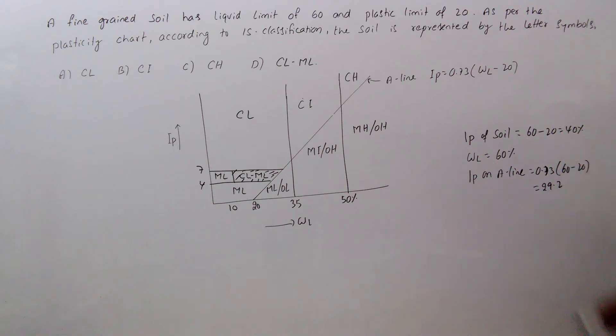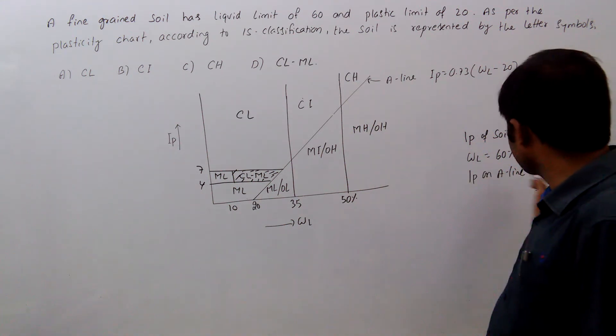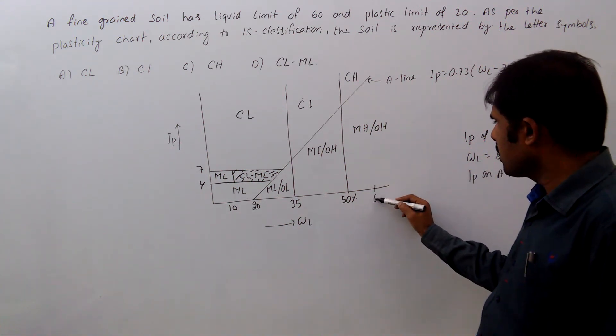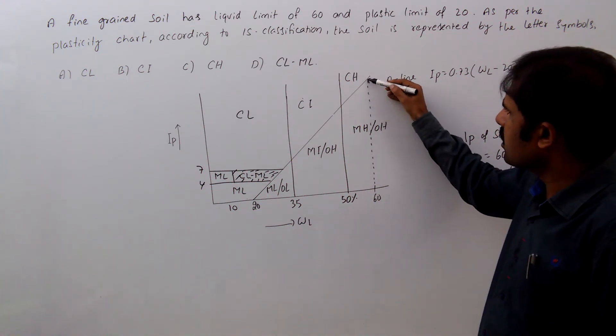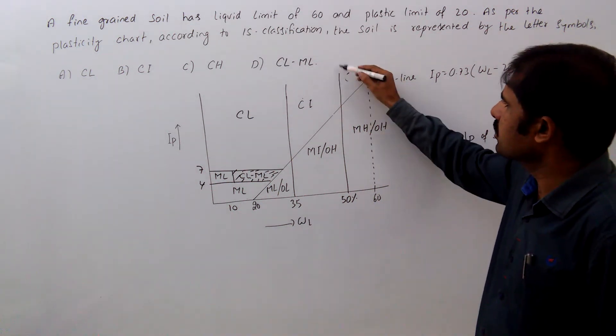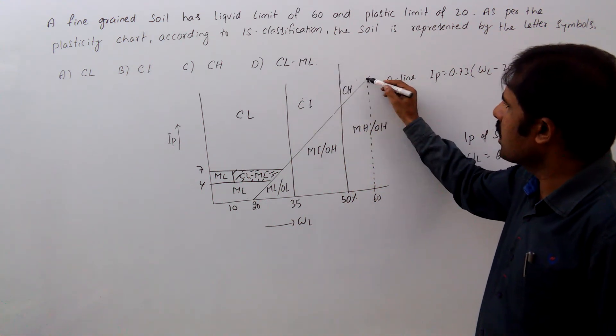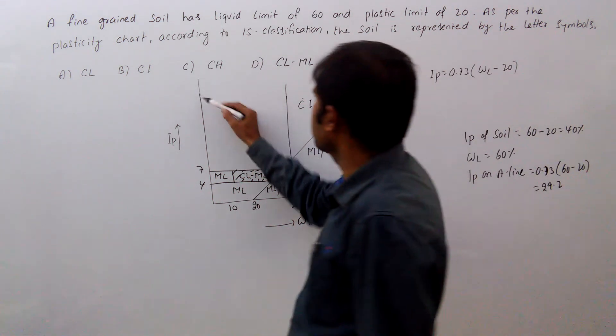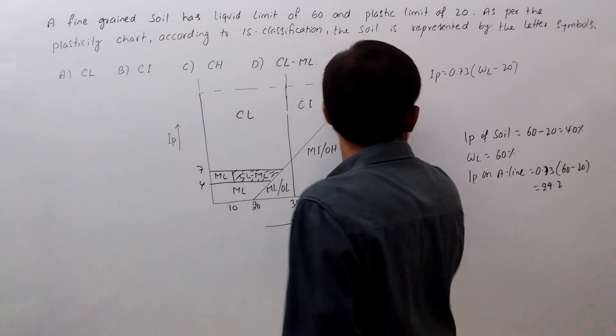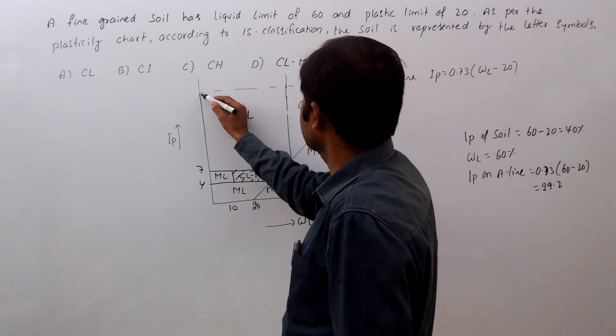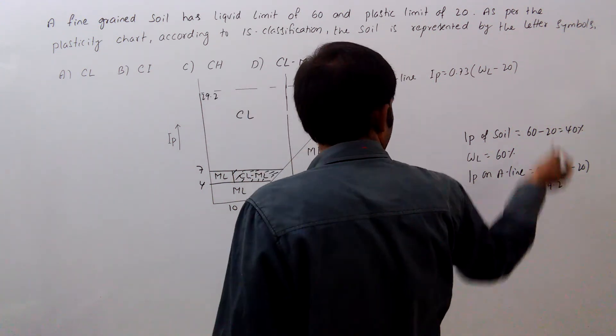So IP of soil is 40. That means if you plot that WL of 60, on A line the value will be 29.2 only. So IP is above that, 40.